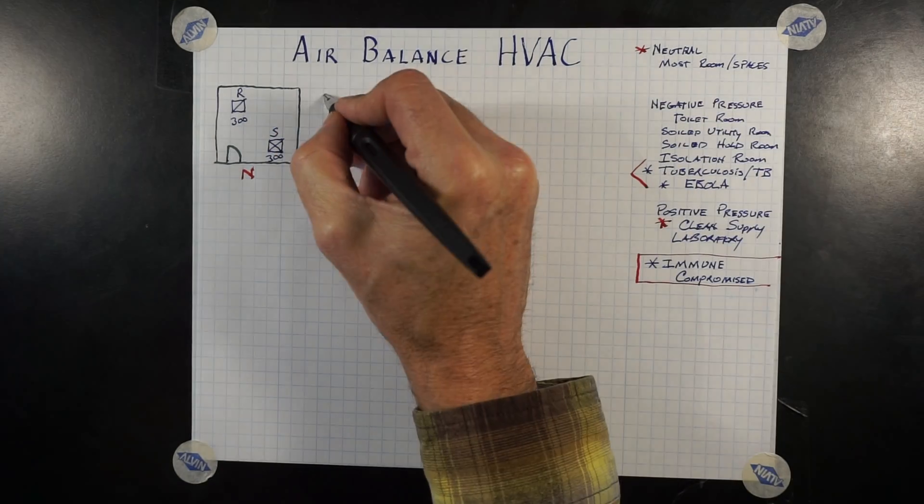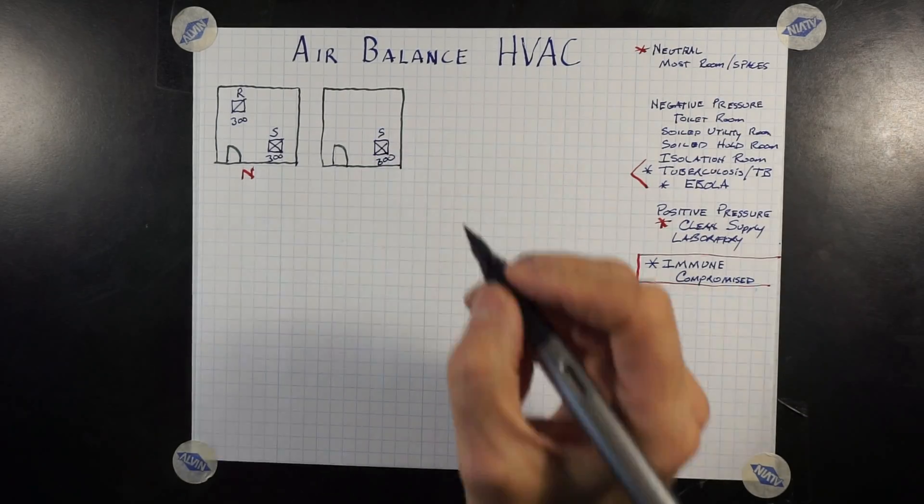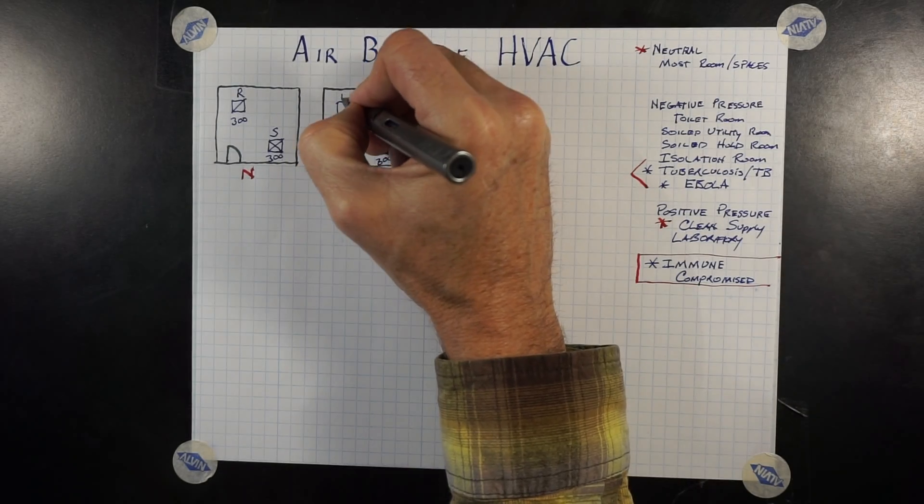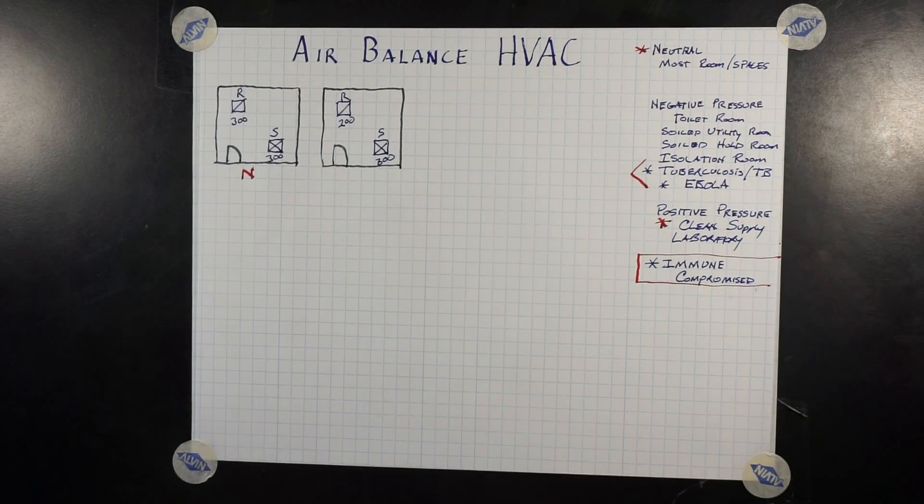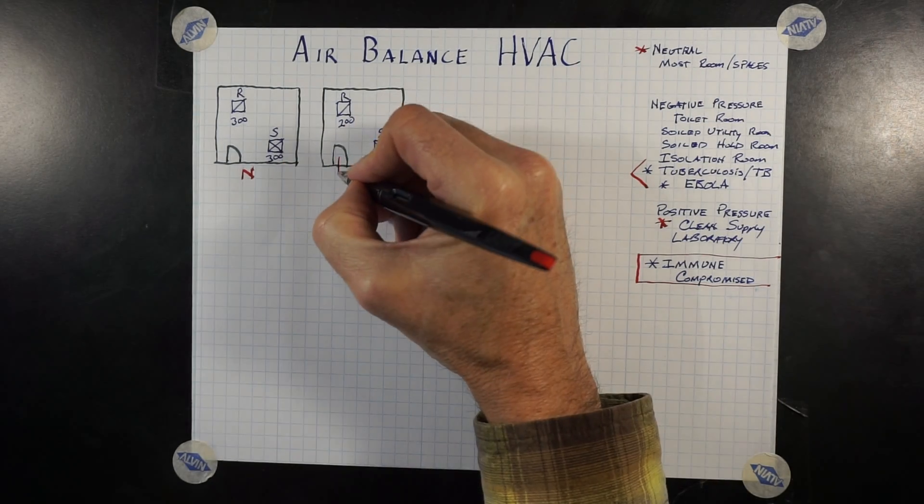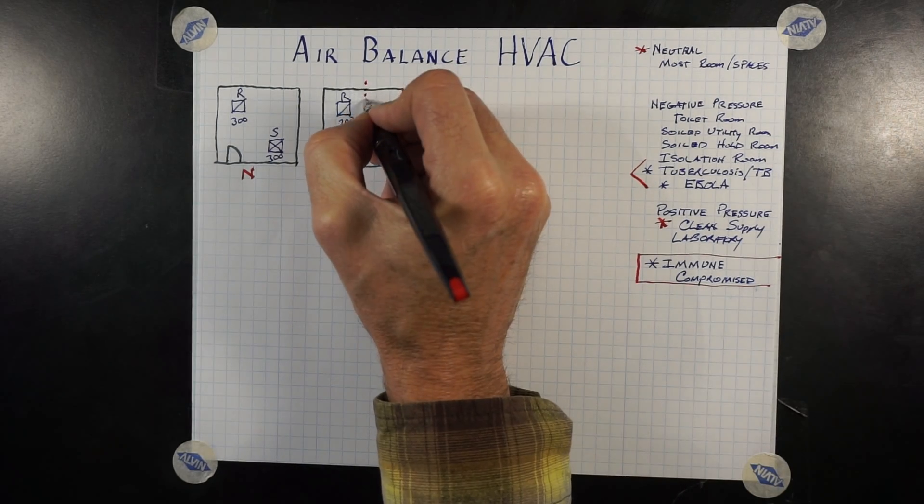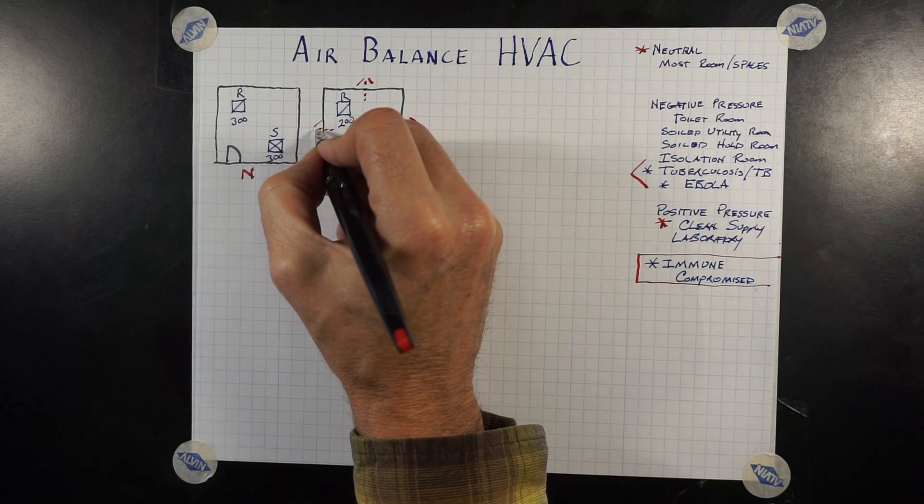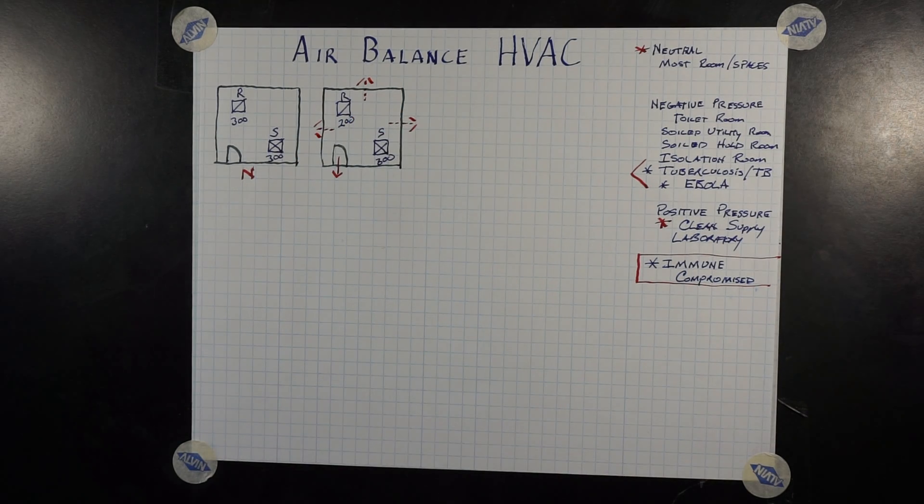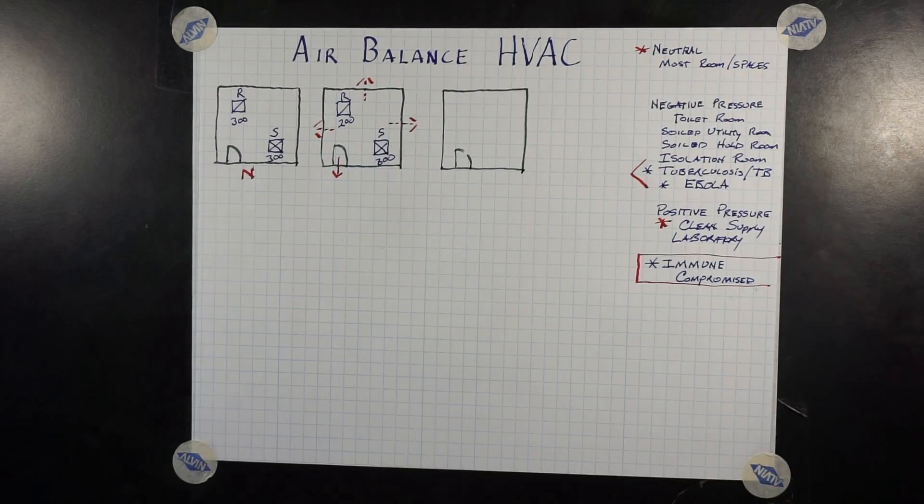With this room, we have 300 cubic feet of air coming into the space, the supply, and we have a return air of only 200. Therefore, any air that cannot be returned is being forced out of the room. And when the door is open, most of the air is going through the door. Otherwise, the air is being forced out through either the windows or the surrounding spaces or walls. It's got to go somewhere.